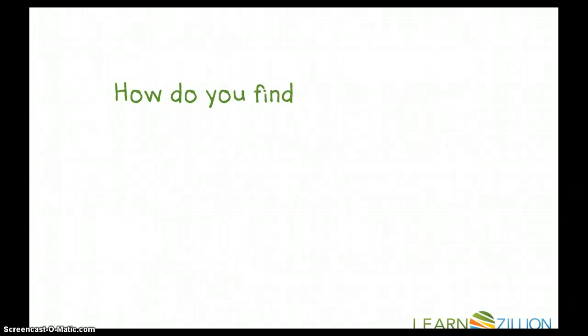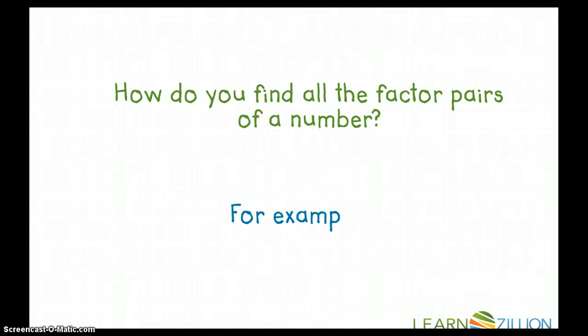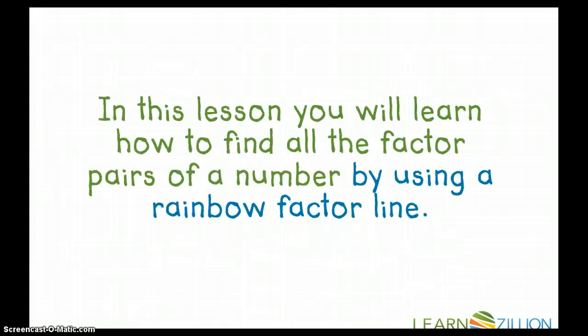Our guiding question of today is how do you find all the factor pairs of a number? For example, find all the factor pairs of 16. In this lesson, you will learn how to find all the factor pairs of a number by using a rainbow factor line.